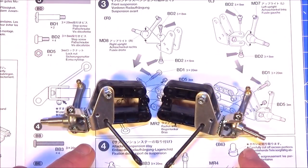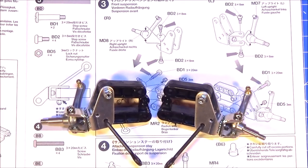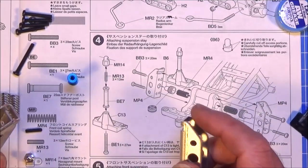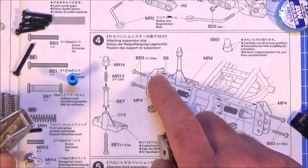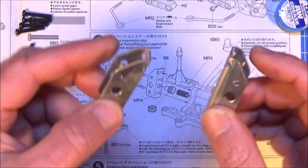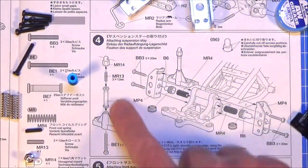So that's your two front suspension units done. It should look something like this. Step 4 is attaching the suspension stay which are these. But first of all I'm going to make up this first which is I think the front body mount.